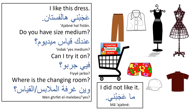To ask 'can I try it on?' say 'fii jarbo' — we used 'jarbo' because 'fistan' is a masculine noun. To find the changing room: 'ween ghurfit malabis' or 'ween ghurfit yes.' If you tried the dress and didn't like it: 'ma ajabni' — I didn't like it. For a feminine noun like 'tannura' (skirt), which is feminine, you say 'fii jarbha' — 'can I try her' literally.